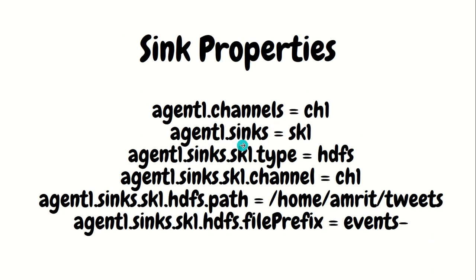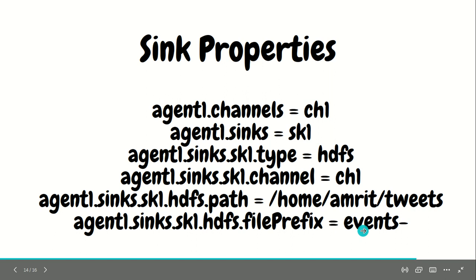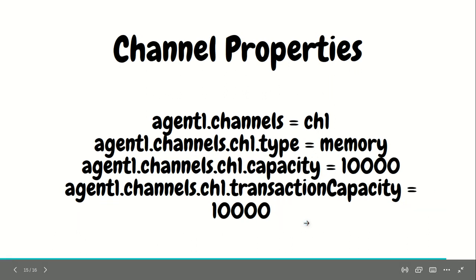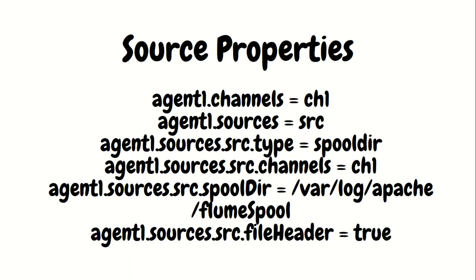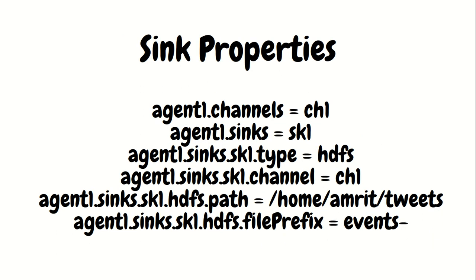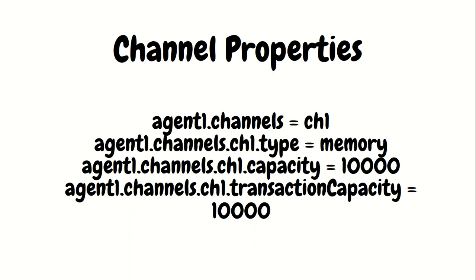For the sink example: agent1.channels equals ch1, agent1.sinks equals sk1. Here we define the type of the sink as HDFS, using the property 'type'. Another property of this sink is 'path', where we define the HDFS path where the data will be stored. There is also the property 'file prefix', specifying that files should begin with the word 'event'. For channel properties, we have 'capacity' and 'transaction capacity'. Capacity defines the total capacity of the channel at a particular time, while transaction capacity defines how many events are going in and coming out. So sources, channels, and sinks each have their own set of properties: source has type, spool dir, file header; sink has type, path, file prefix; channel has capacity, transaction capacity, and type (memory channel).